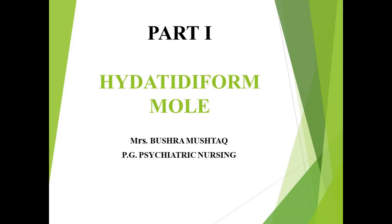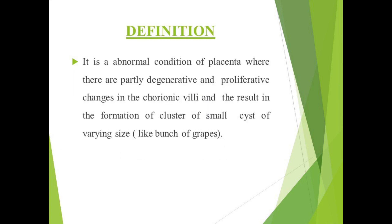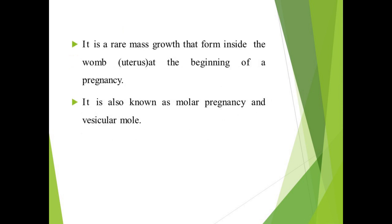Assalamu alaikum warahmatullahi wabarakatuh. This is Mrs. Bushra Mushtaq, PG Psychiatric Nursing. Today I'm introducing a new topic: the hydatidiform mole, part one. The hydatidiform mole is basically an abnormal condition of the placenta itself. In the placenta, the chorionic villi degenerate and proliferate, resulting in a varying cluster of cysts which give a bunch of grape-like formation. This hydatidiform mole is also known as molar pregnancy or vascular mole.